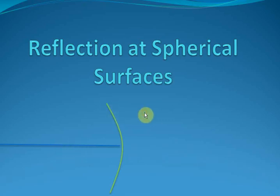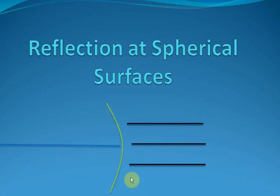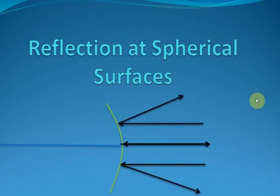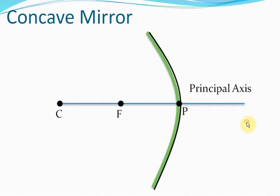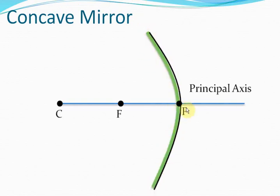A spherical surface is formed when you take a sphere and cut it into small parts. Each part of the sphere can then be used as a mirror. If you cut the sphere such that you make the inside portion of the sphere the reflecting material, then you get a concave mirror. The reflecting surface in a concave mirror is concave in shape.